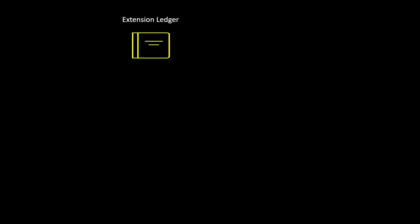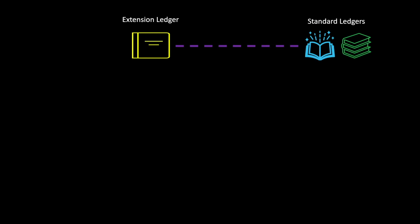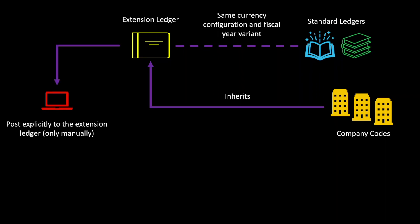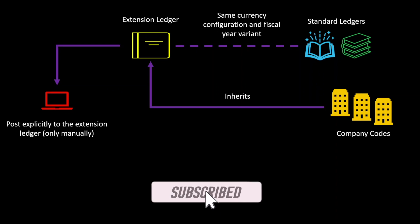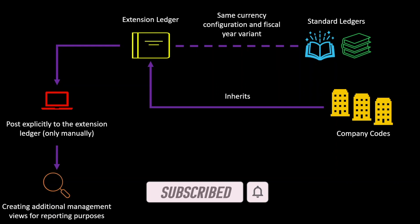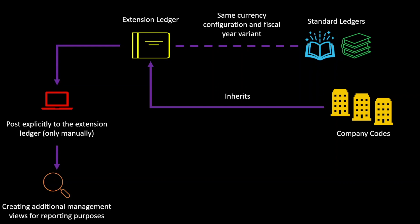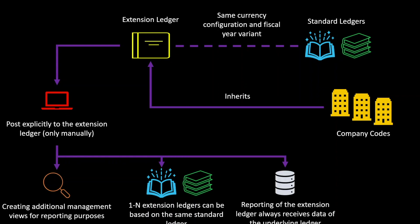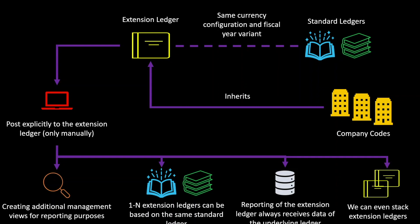Furthermore, we have a rather new topic called extension ledgers. Extension ledgers can be defined in addition to the standard ledgers, but they must be based on standard ledgers — meaning that they inherit the currency and fiscal year variant of the standard ledger they are based on. The same also counts for all of the company codes. We can use the extension ledger to post financial data explicitly to them without posting to the other ledgers, meaning that we are only allowed to post manually to those extension ledgers. Extension ledgers themselves are used for the creation of additional management views for reporting purposes. One or even several extension ledgers can be based on the same standard ledger, but the reporting of the extension ledger also always receives the data of the underlying ledger. And it's even possible to stack extension ledgers upon each other for creating even more management views.